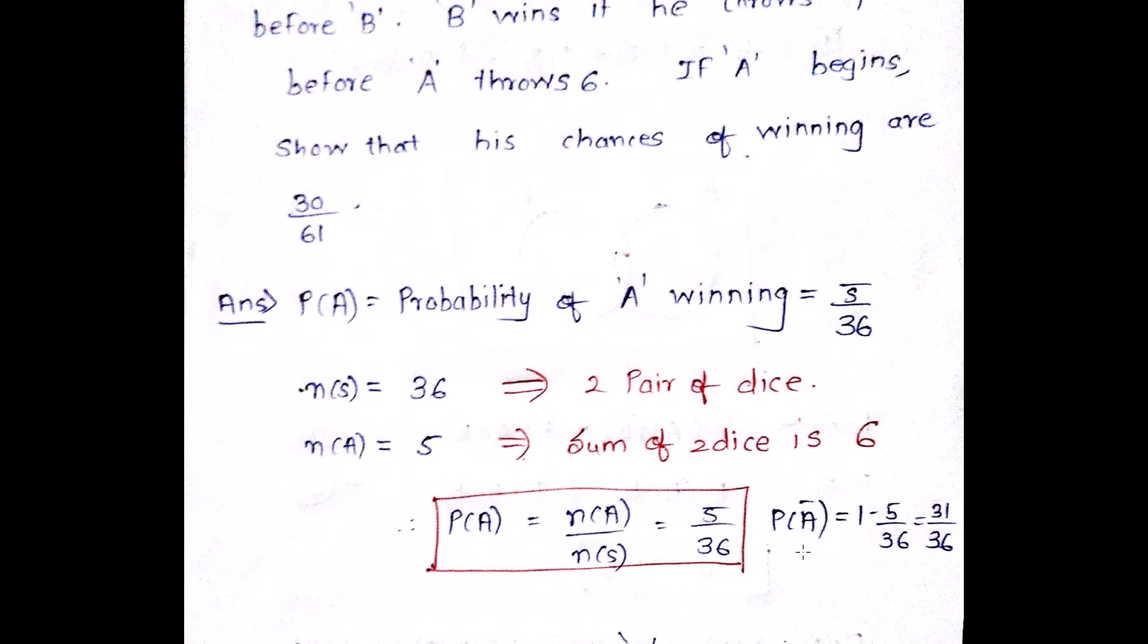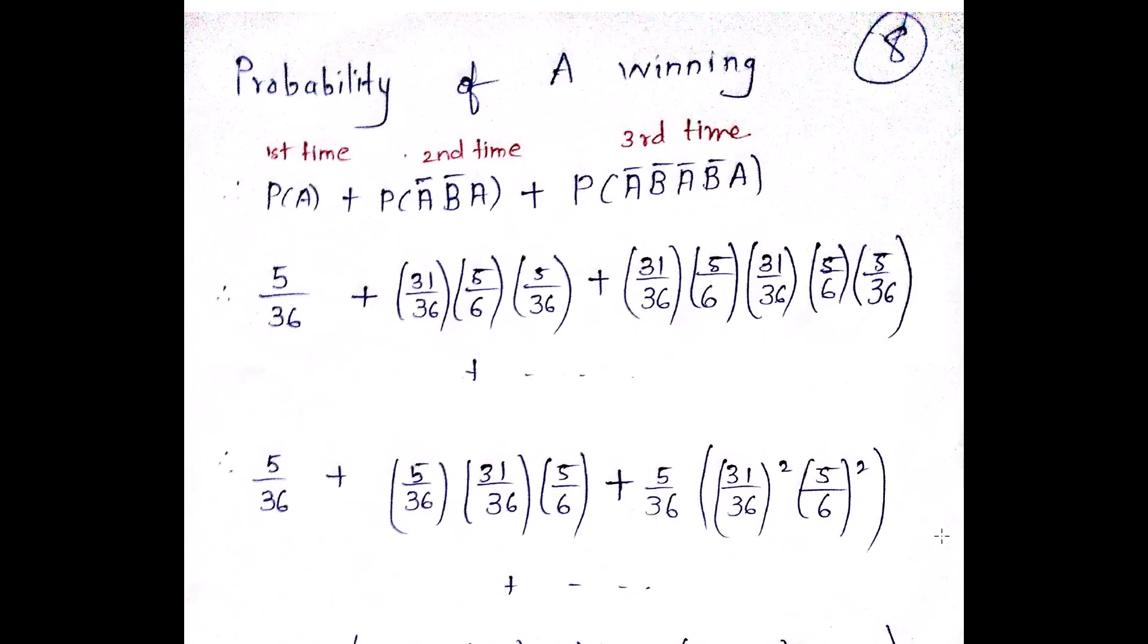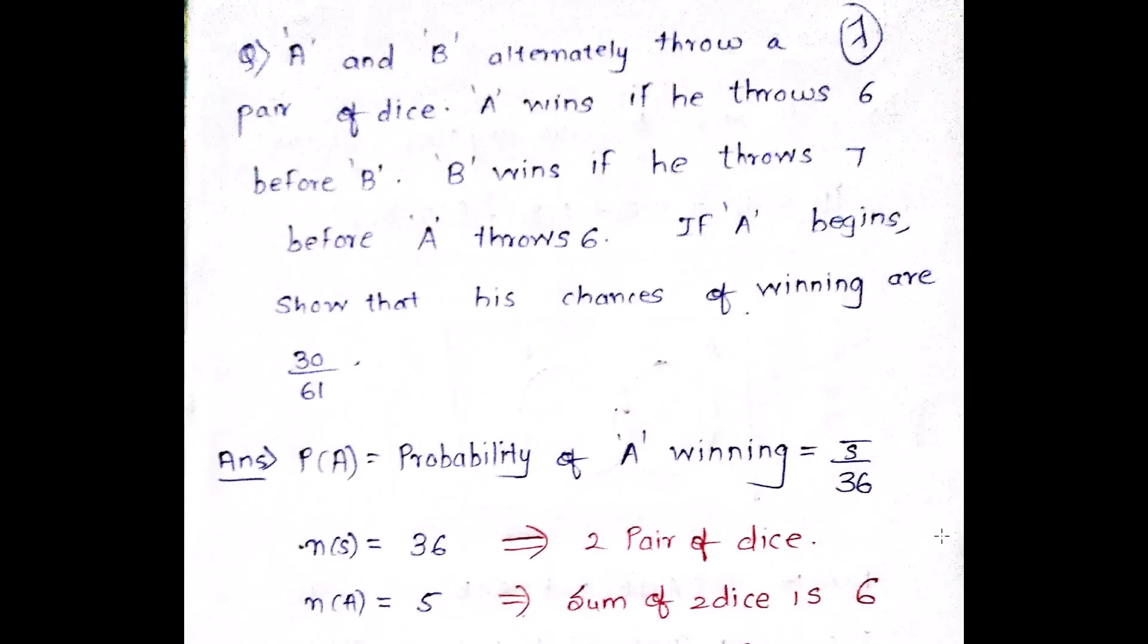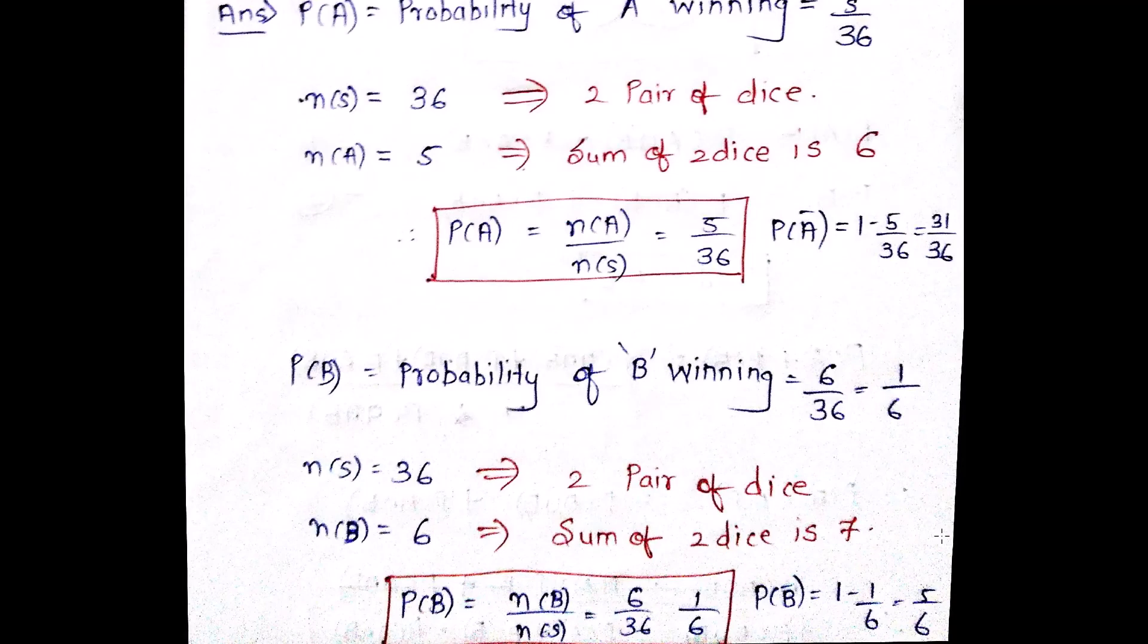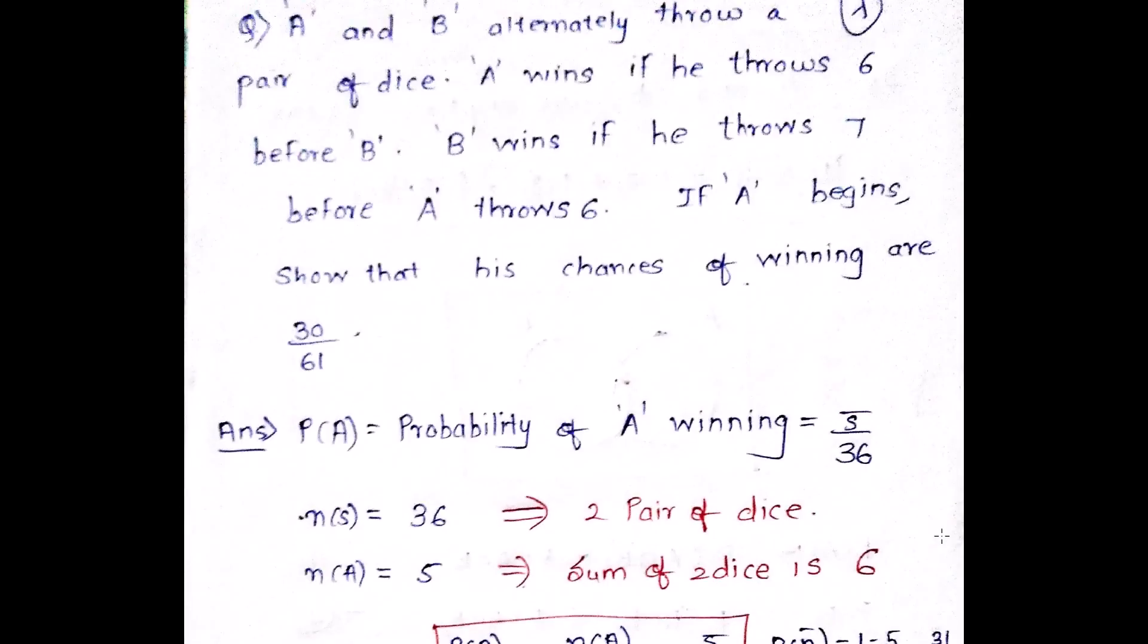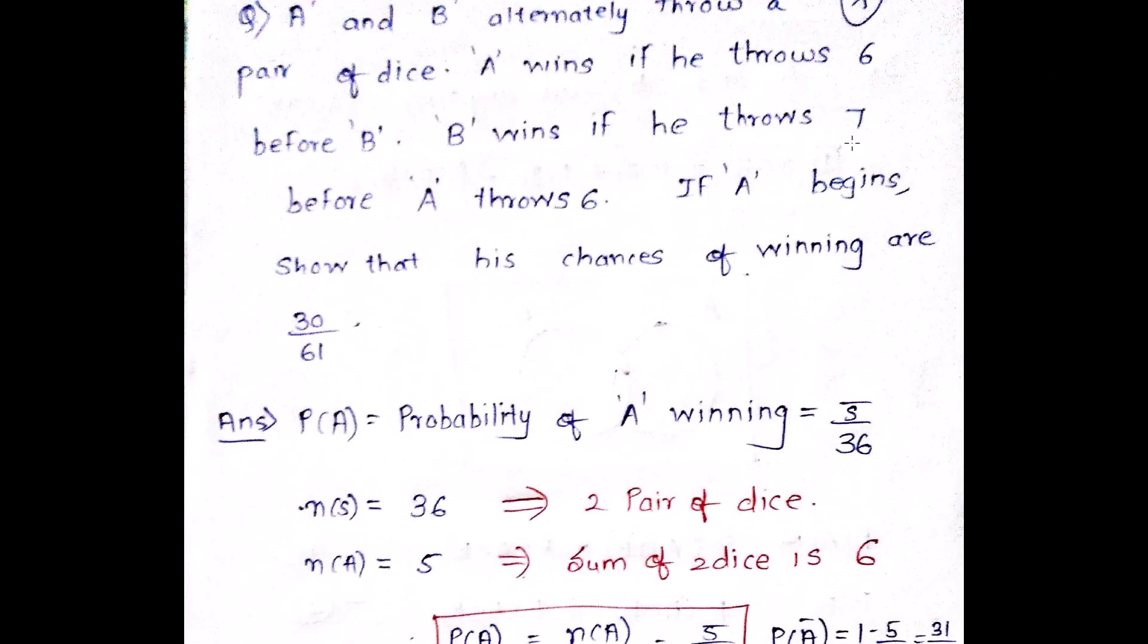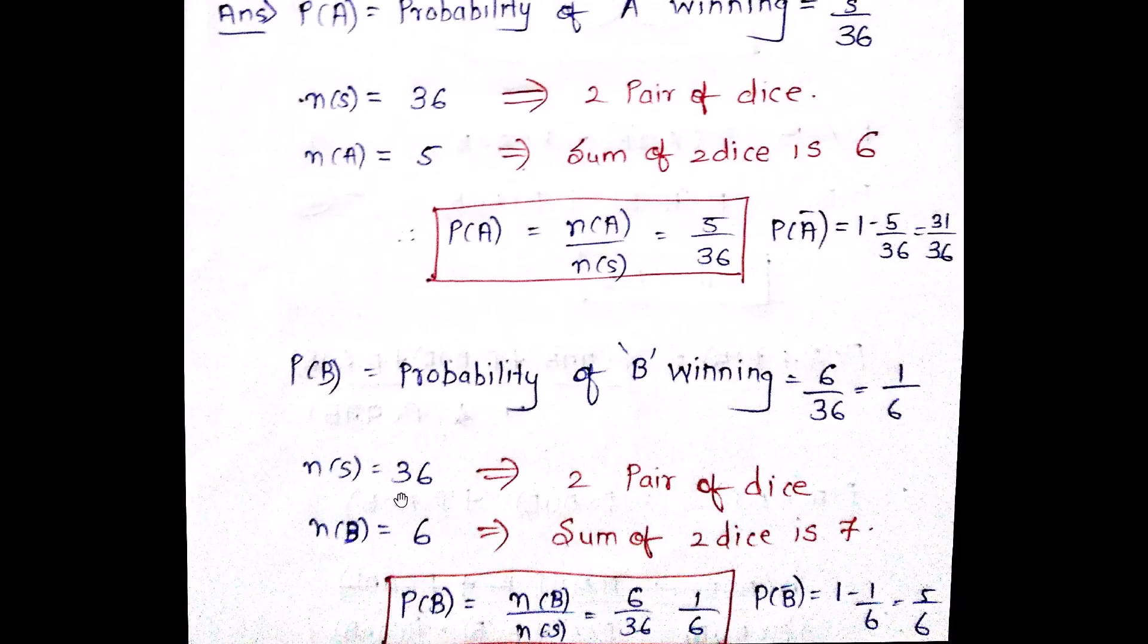Therefore, the probability of A is given as 5 by 36. And if I want to know probability of A bar, it is 1 minus 5 by 36, 31 by 36. Similarly, what is the probability of B winning? Now B will win if you see, if he throws 7. So what is the probability of throwing 7? Again, the total sample space is 36 because the two pair of dice. But what is the probability of 7 coming? It is 6. So it is 6 by 36, it is 1 by 6. Therefore, the P of B bar is given as 1 minus 1 by 6 is 5 by 6.